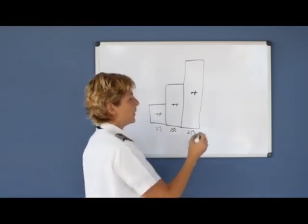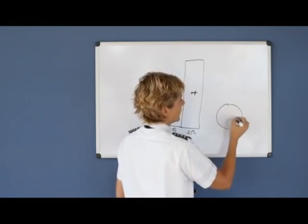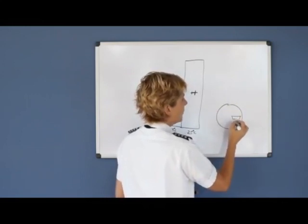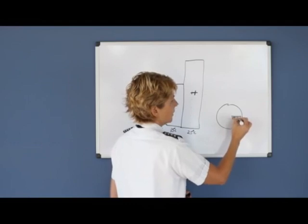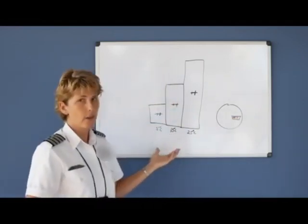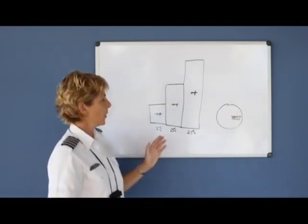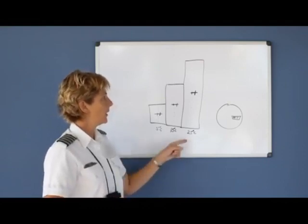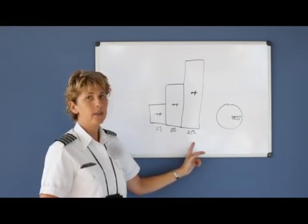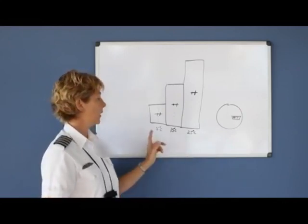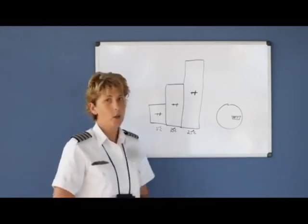Now, how do we know how high we are is we use our altimeter. But the altimeter only has a place to correct for nonstandard pressure. We have no way to correct for the nonstandard temperature. So you are physically flying higher than indicated on a hot day. And you are physically flying lower than indicated on a cold day.